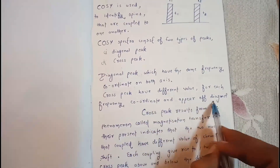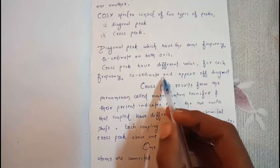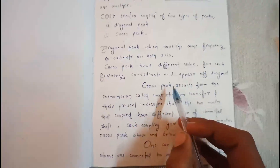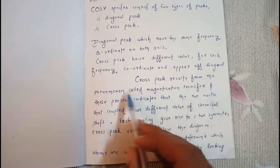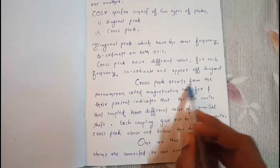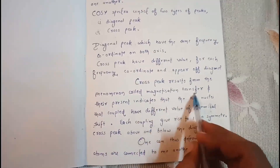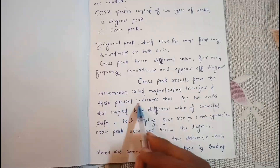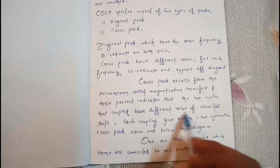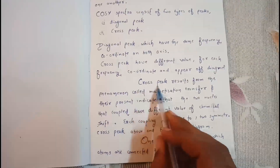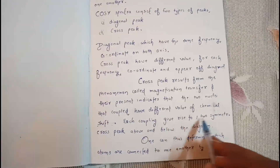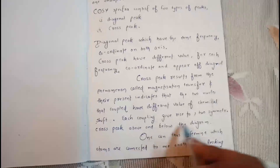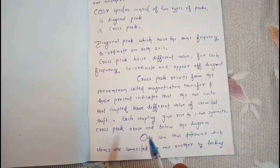Cross peaks have different values for each frequency coordinate and appear off the diagonal. Cross peaks result from a phenomenon called magnetization transfer. Their presence indicates that two coupled nuclei have different values of chemical shift. Each coupling gives rise to two symmetrical cross peaks, one above and one below the diagonal.